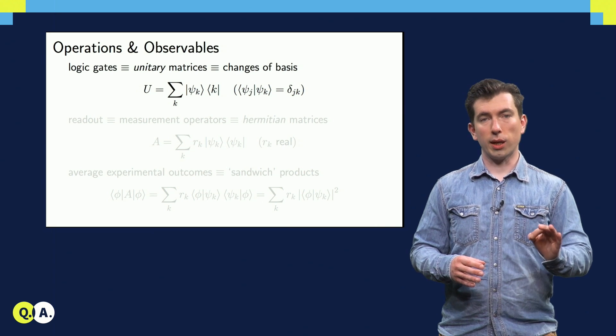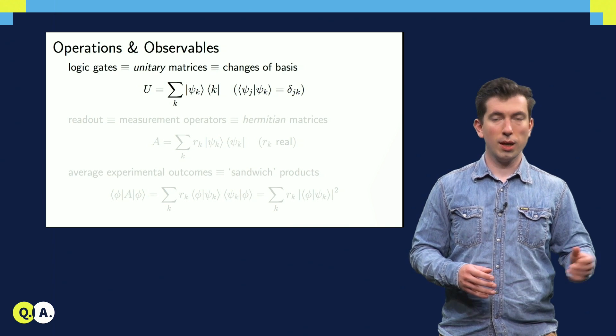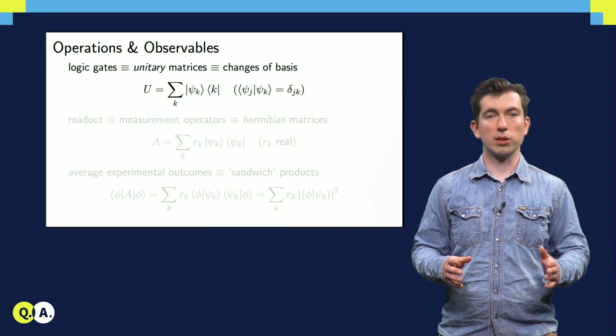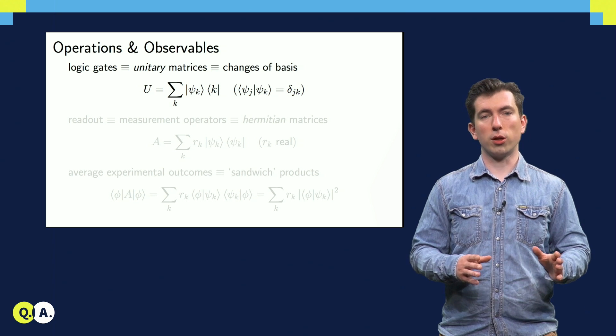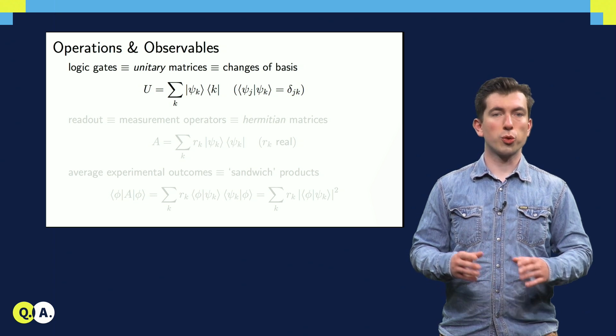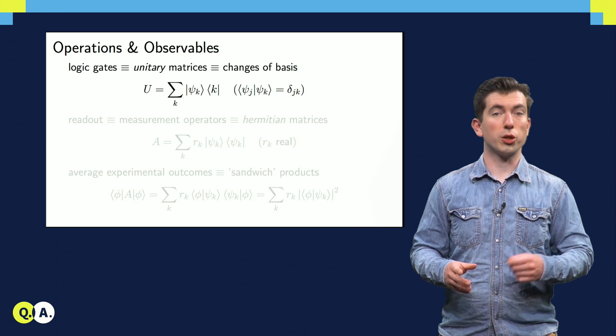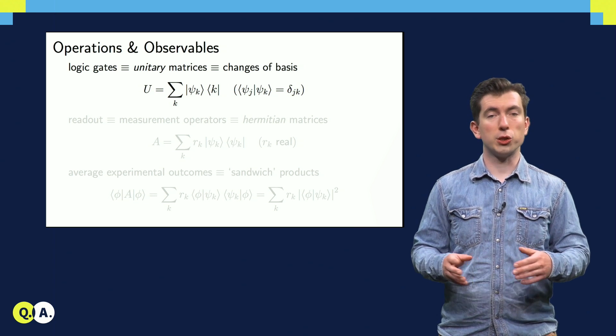The logic gate is the smallest classical computing system, and all classical computations can be expressed as a large sequence of these gates. The quantum counterpart to a logic gate is a unitary matrix, which replaces the computational basis with a new basis that depends on the operation that we want to perform.